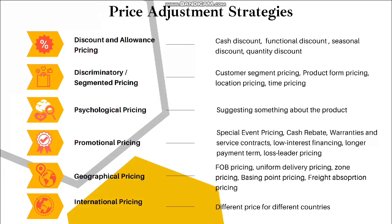The second adjustment strategy is discriminatory or segmented pricing. Examples include customer segment pricing, product form pricing, location pricing, and time pricing.